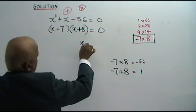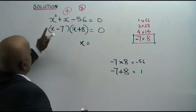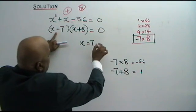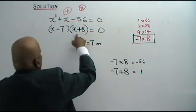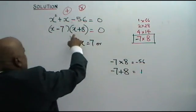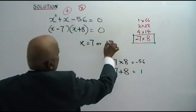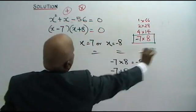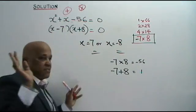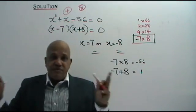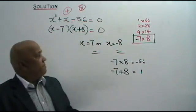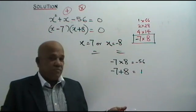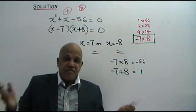Therefore, x equals — from the first bracket, if negative, the answer is positive, so x equals 7. Or, from the second bracket, x plus 8 equals 0, therefore x equals negative 8. These are your answers — very, very simple.